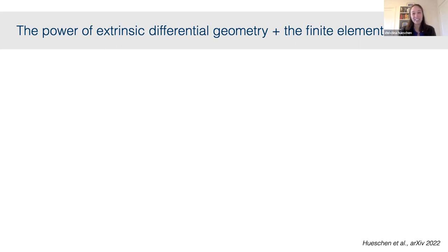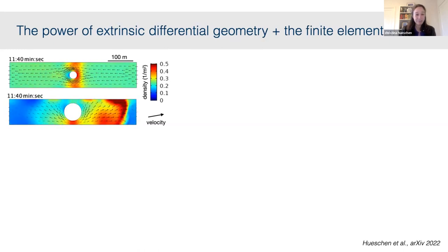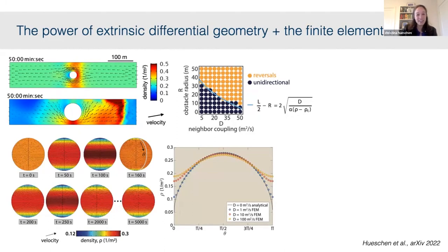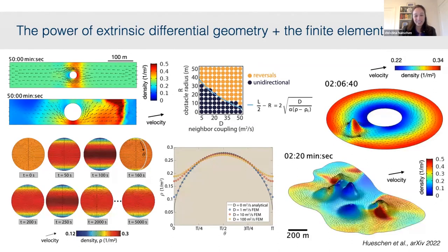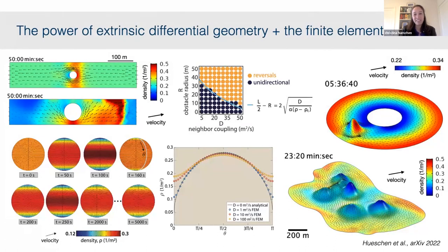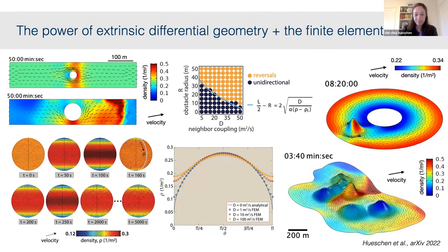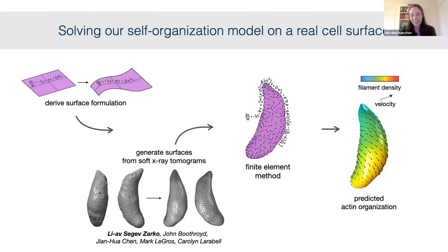I want to highlight how exciting this extrinsic differential geometry and finite element method approach has been. We've used it to think about flocks and herds moving through channels or channels with obstacles, which can lead to analytical results. We've thought about flocks on spheres, on different curvature surfaces, and even herds on complicated islands with Gaussian hills — and we're excited about it as a path towards bridging continuum active matter theory and messy real-world data geometries and boundary conditions.